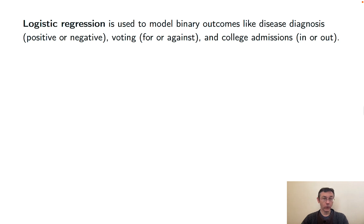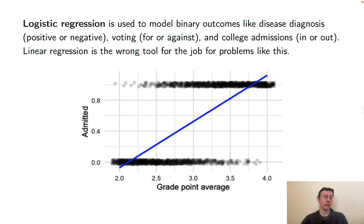Some examples where logistic regression might apply would be disease diagnosis, where you either have it or you don't, voting where you either vote for or against a thing, or college admissions where you either get in or you don't. And the example I'm going to use throughout this video actually has to do with college admissions.